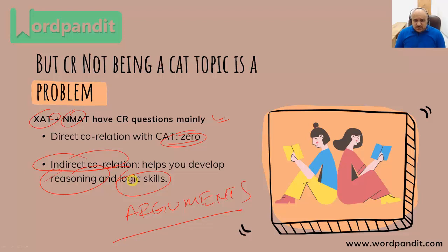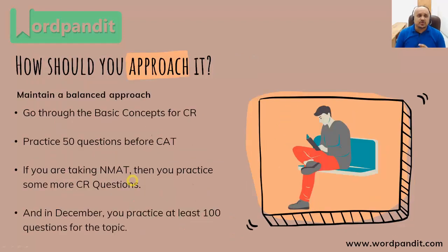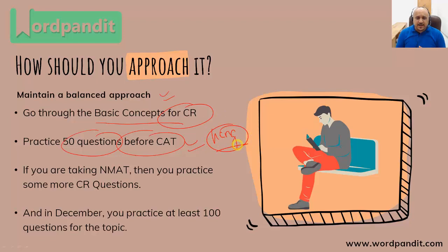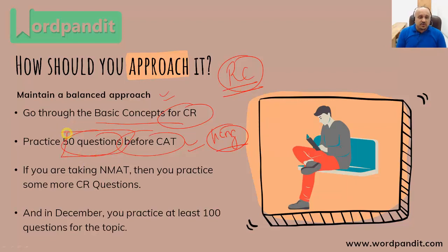Since you should be studying this topic but in a limited quantity, what should you be doing? How should you approach it? You maintain a balanced approach — cover the basic concepts for CR at this stage. Don't invest a lot of time. These are part of the Word Pandit course; you can also search for CR concepts online. Practice roughly 50 questions before CAT so you get a basic hang of it. You should never say never with any topic. Also, there is a small element of such reasoning employed in RC questions as well — at times you get critical reasoning based RC questions. So do solve around 50 questions for critical reasoning so that you're ready for it.